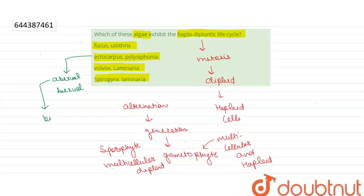These are produced in sporangia. And sexual reproduction in Ectocarpus takes place by isogamy or anisogamy.